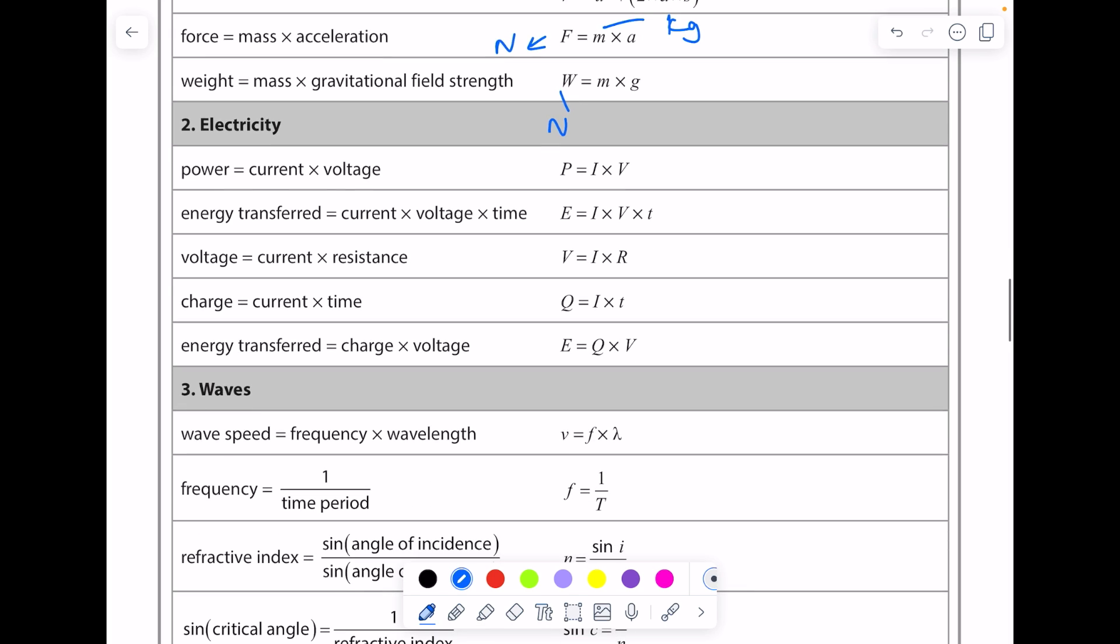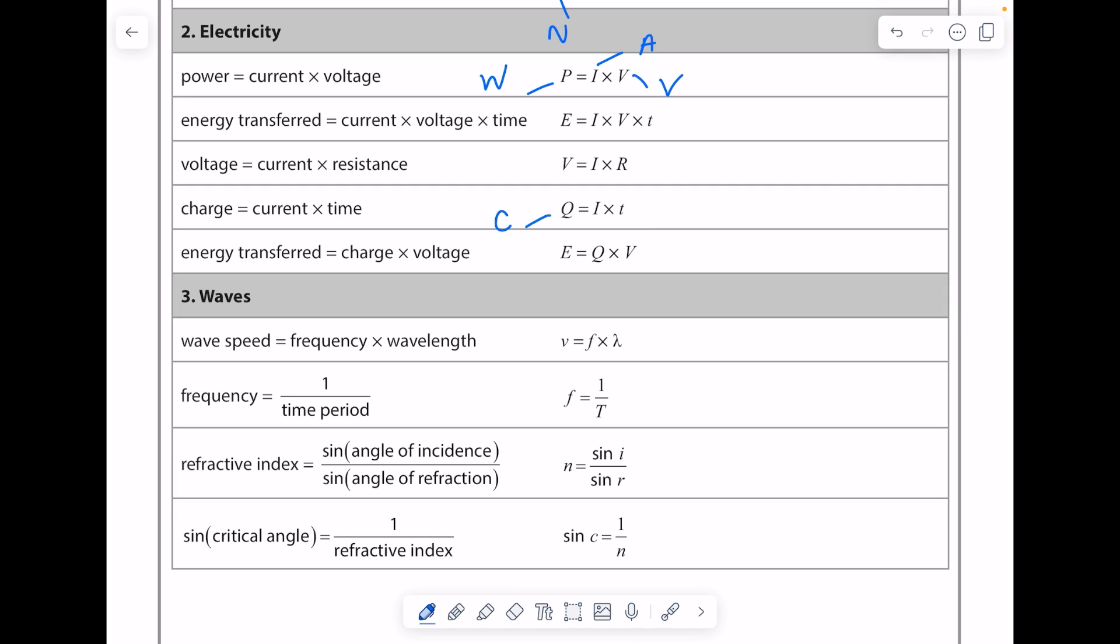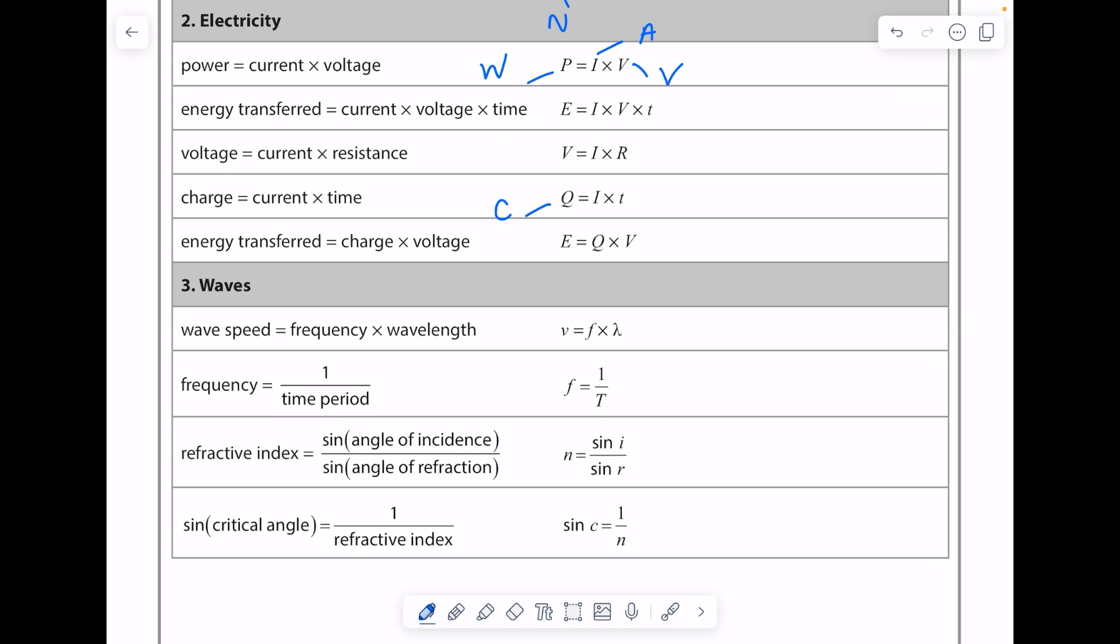Then we move on to electricity. Key units here: the unit of power is watts, the unit of current is amps, and the unit of voltage is volts. Charge - be careful here, the unit of charge is coulombs. Sometimes they ask you for definitions like what is current. Use the equation to help you. Rearrange the equation to make current the subject of the formula. So we can see that current is charge divided by time. So what is current? It's the flow of charge per unit time. Look, the equation even tells you.